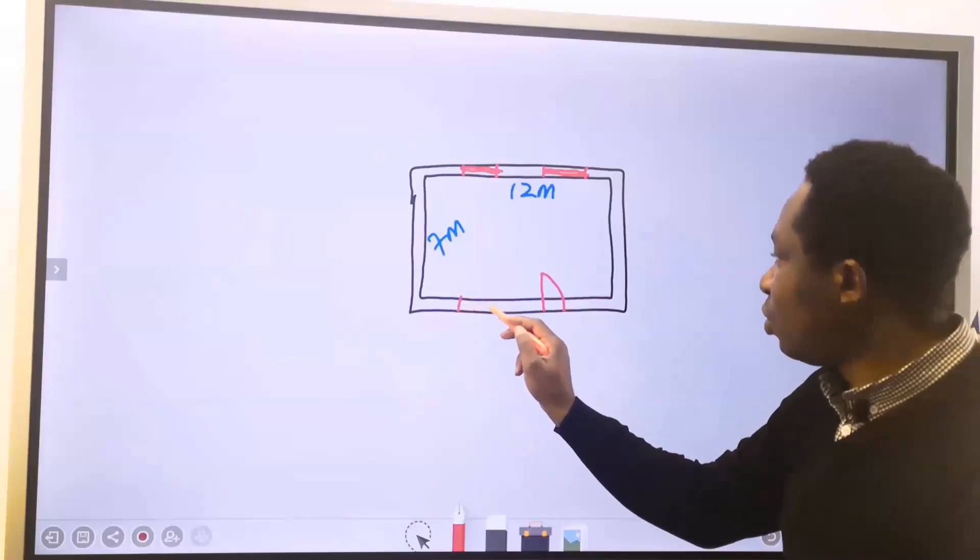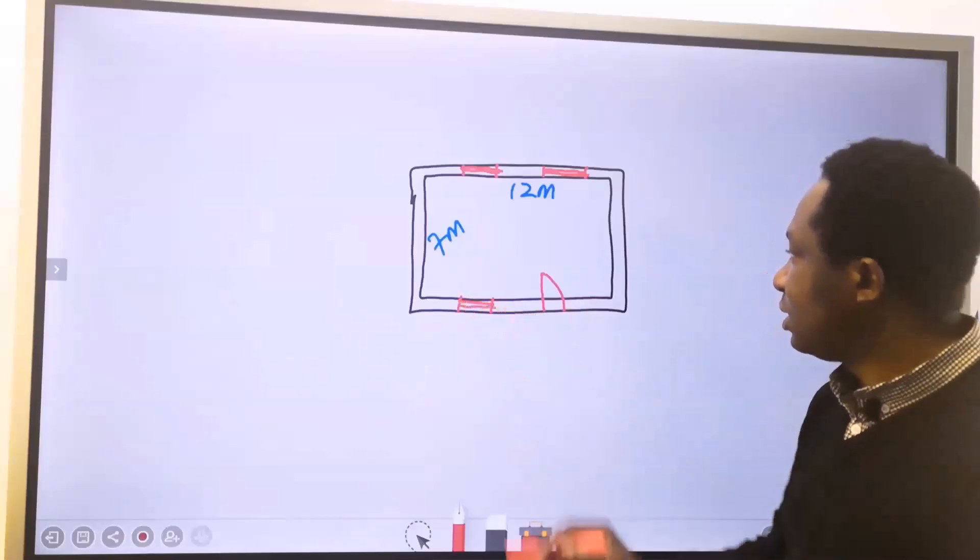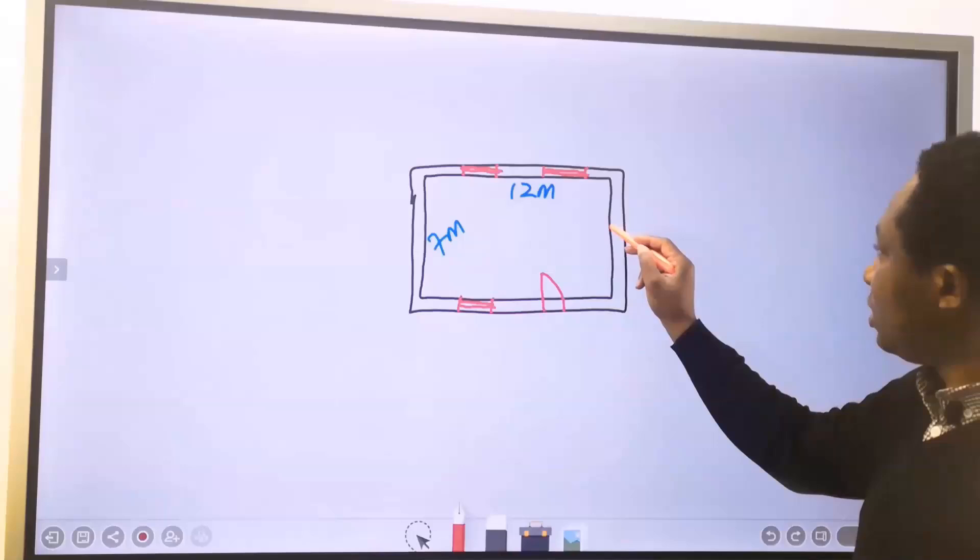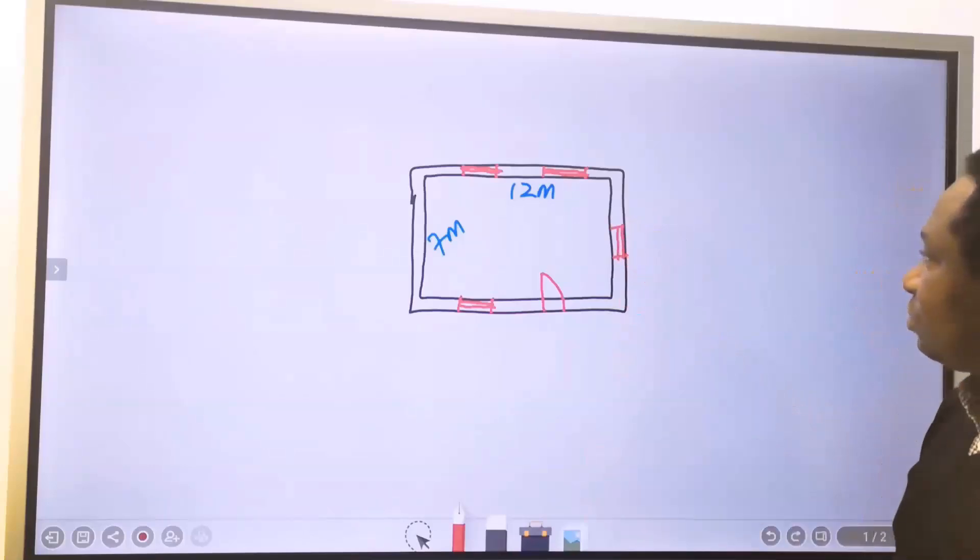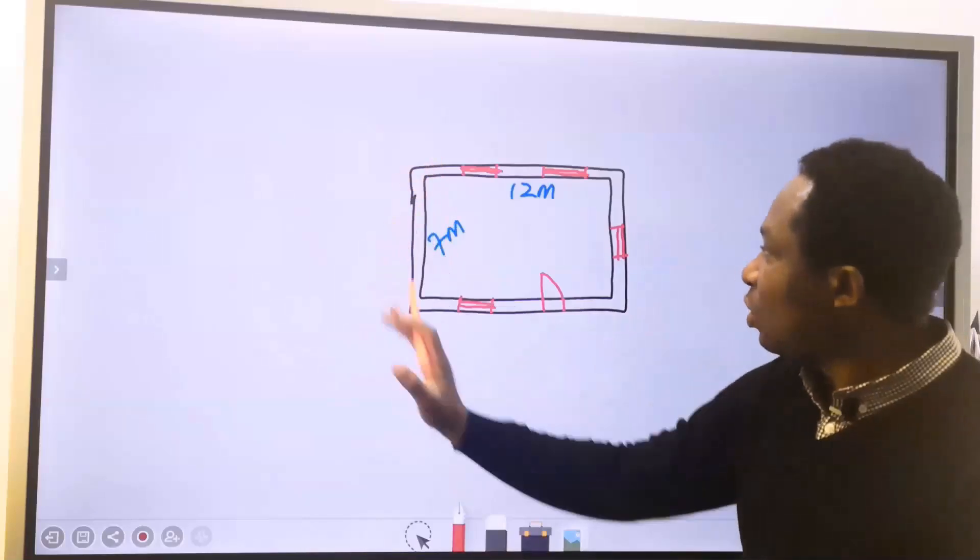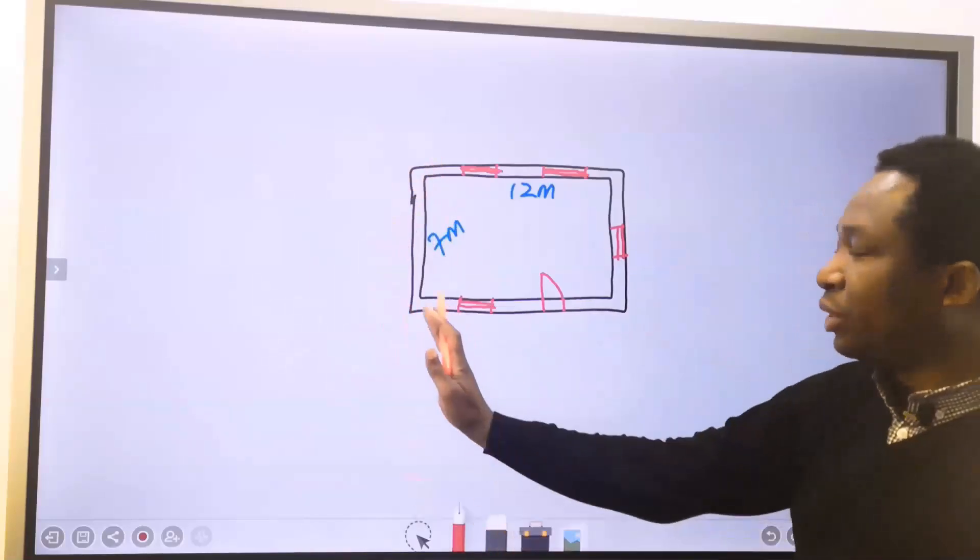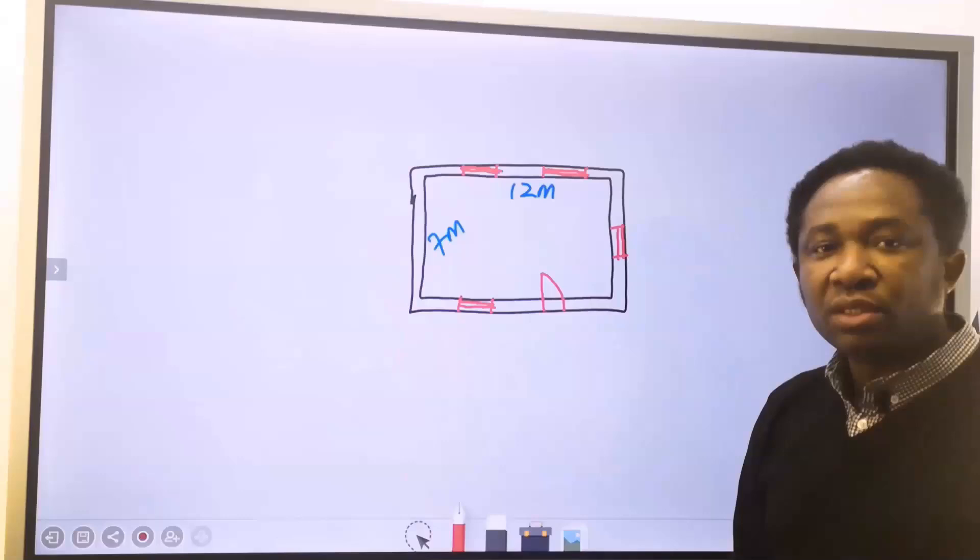And we are going to have a window on this side. We are proposing one window on this side. And on this side of the building, no window, no door. This is just for the external envelope.